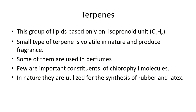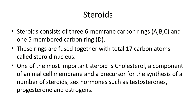Now we are going to study steroids. Steroids consist of three six-membered carbon rings A, B, and C, and one five-membered carbon ring named D. These rings are fused together with a total of 17 carbon atoms and are called the steroid molecule. One of the most important steroids is cholesterol, a component of animal cell membrane and a precursor for the synthesis of sex hormones such as testosterone, progesterone, and estrogen.